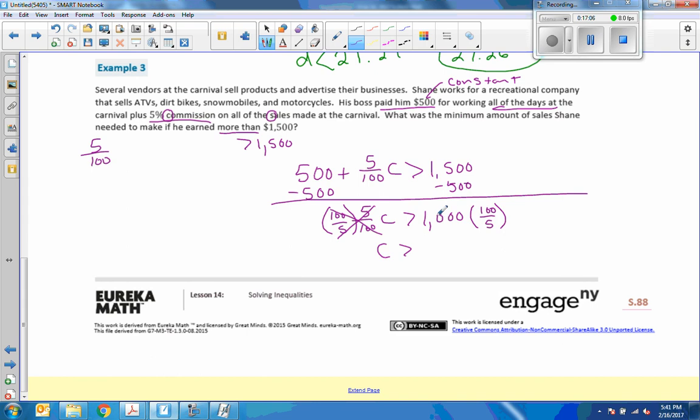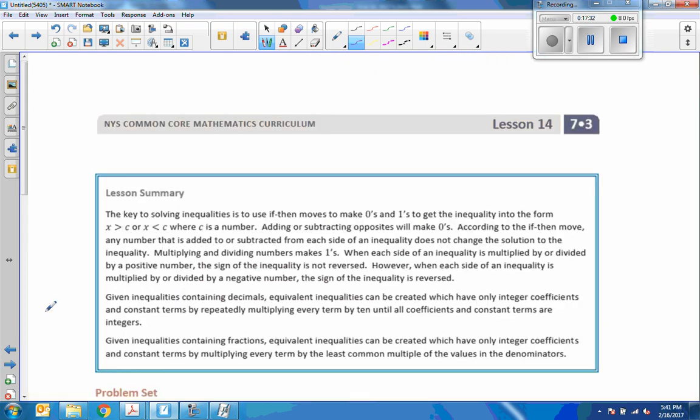So it's always best to divide first, to make it smaller, before you make it bigger. 1,000 divided by 5 is 200. 200 times 100 is 200 to worth 20,000. So the sales have to be more than $20,000 for you to earn more than $1,500. You have to sell more than $20,000 for you to earn more than $1,500. So that's the end of lesson 14. Thank you for your problems. Thank you.